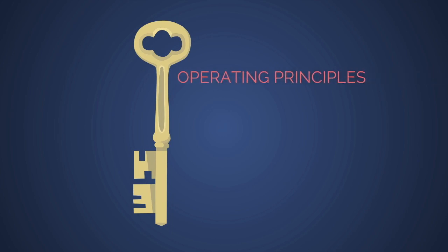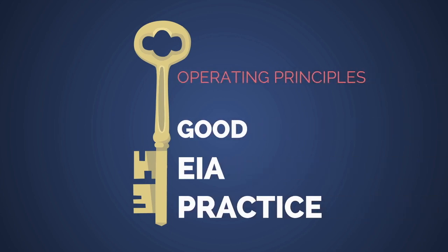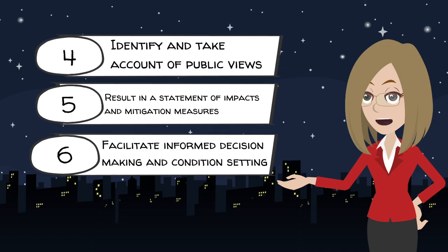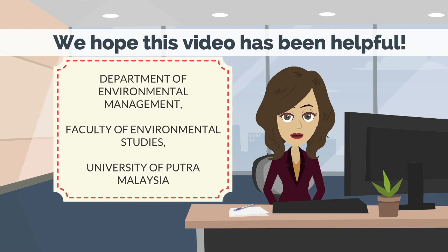There are several key operating principles of good environmental impact assessment practice: be applied to all proposals with significant impacts; begin early in the project cycle; address relevant environmental, social, and health impacts; identify and take account of public views; result in a statement of impacts and mitigation measures; and facilitate informed decision making and condition setting.